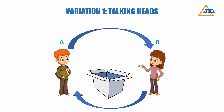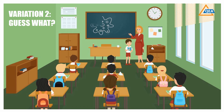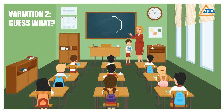Variation two is known as 'Guess What.' Here, the teacher calls out a student in front of the class and draws a figure or writes a word on the board. The entire class can see it except the child who is called. The student will now ask questions to the rest of the class, and the class will reply in a yes or no. The student in front has to guess what is written on the board.